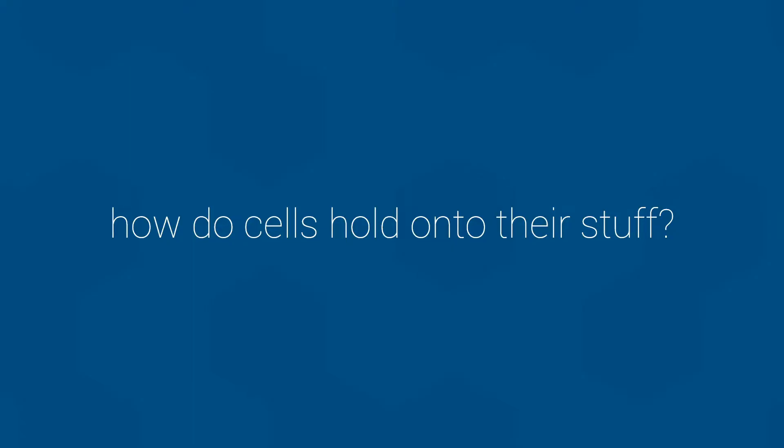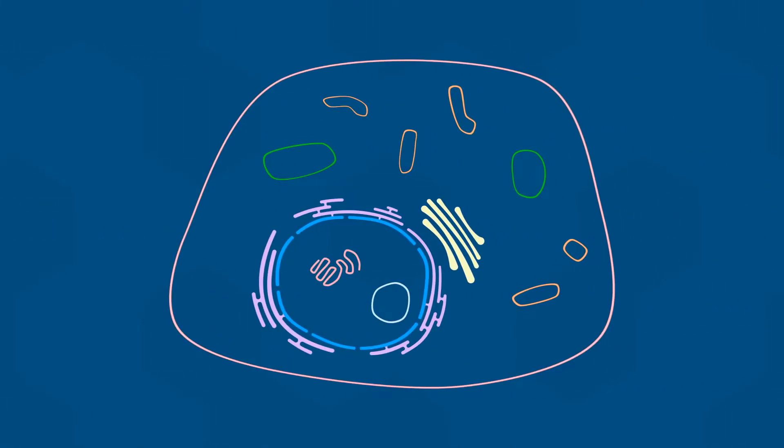You see, one of the things that makes a cell a cell is that it has a container that keeps all of its important stuff together in one place. This container, which is essentially a sealed flexible bag, is what defines the cell's boundary. It is the border that defines the tiny bit of the universe that belongs to the cell.